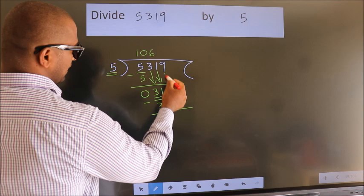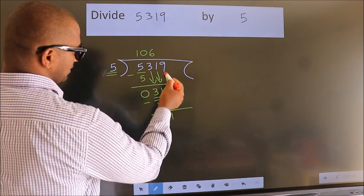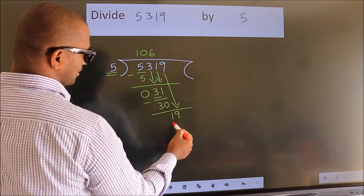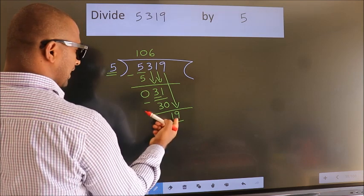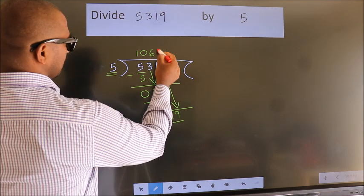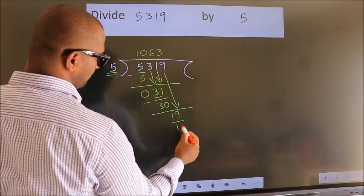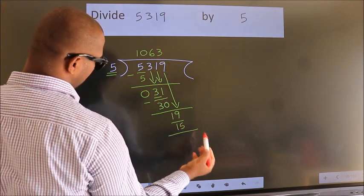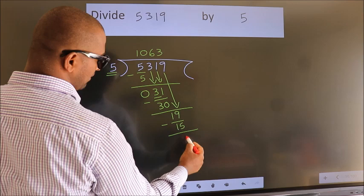After this, bring down the beside number. So, 9 down. So, 19. A number close to 19 in 5 table is 5, 3, 15. Now, we subtract. We get 4.